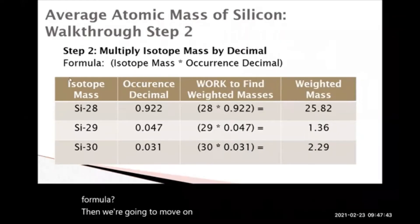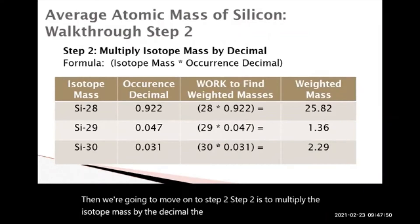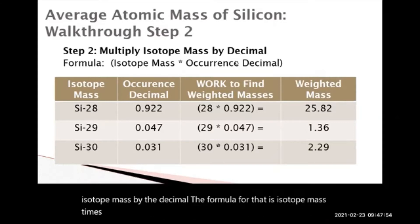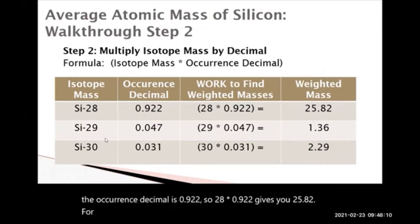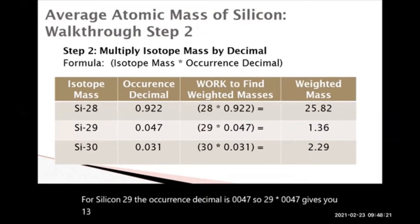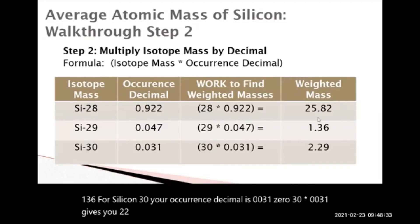Step two is to multiply the isotope mass by the decimal — the formula is isotope mass times occurrence decimal. For silicon-28, the mass is 28 and the occurrence decimal is 0.922, so 28 times 0.922 gives you 25.82. For silicon-29, the occurrence decimal is 0.047, so 29 times 0.047 gives you 1.36. For silicon-30, the occurrence decimal is 0.031, so 30 times 0.031 gives you 2.29. Remember, the occurrence decimal is your percentage divided by 100.